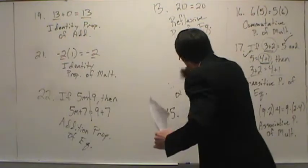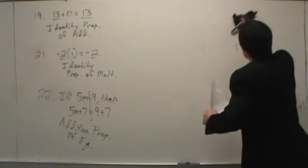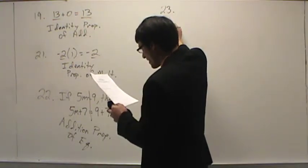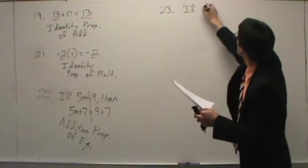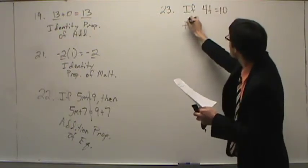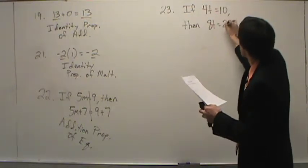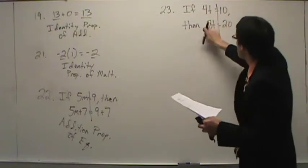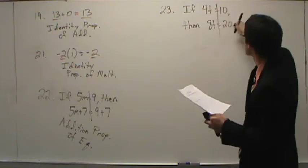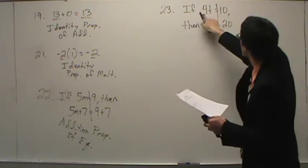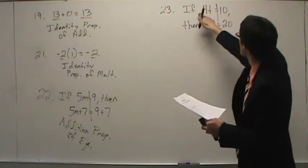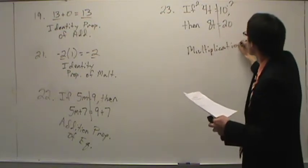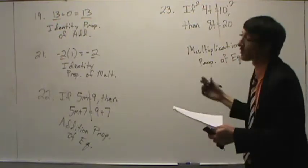Number twenty-three: if four equals ten, then eight equals twenty. Line them up right above one another. How do we get from four to eight and from ten to twenty? Adding four doesn't work — ten plus four isn't twenty. But four times two is eight, and ten times two is twenty. So two was multiplied on both sides. This is the multiplication property of equality — and remember, division is the same thing.